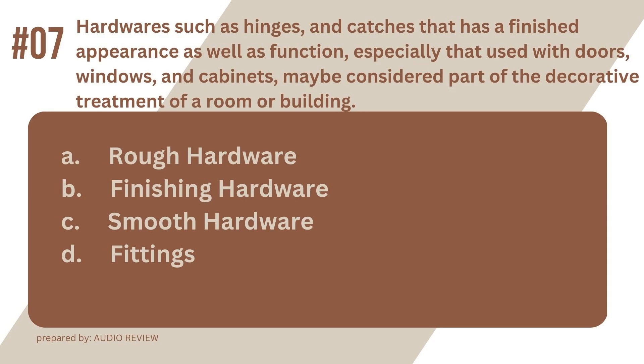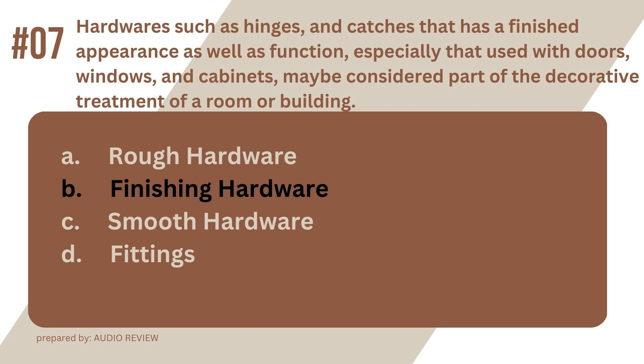Question 7. Hardware such as hinges and catches that has a finished appearance as well as function, especially that used with doors, windows, and cabinets, may be considered part of the decorative treatment of a room or building. A. Rough hardware. B. Finishing hardware. C. Smooth hardware. D. Fittings. The answer? It's B. Finishing hardware. Hardware such as hinges and catches that has a finished appearance as well as function, especially that used with doors, windows, and cabinets, may be considered part of the decorative treatment of a room or building. Finishing hardware.